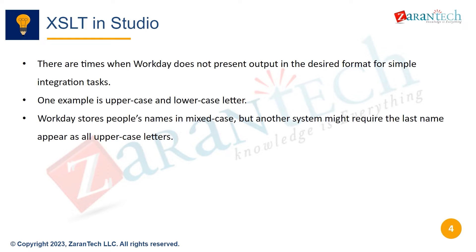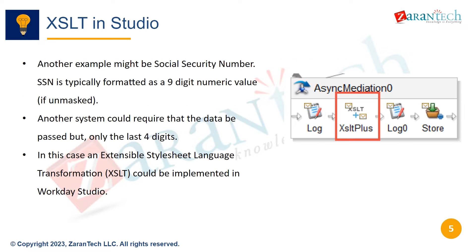There are times when Workday does not present output in the desired format for simple integration tasks. One example is uppercase and lowercase letters — Workday stores people's names in mixed case, but another system might require the last name appear in all uppercase letters. Another example is social security number. SSN is typically formatted as a nine-digit numeric value if unmasked, but another system could require only the last four digits. In this case, an extensible stylesheet language transformation, or XSLT, could be implemented in Workday Studio to transform the data.